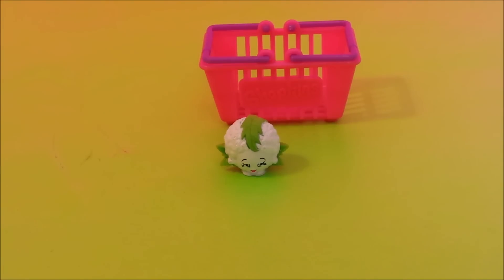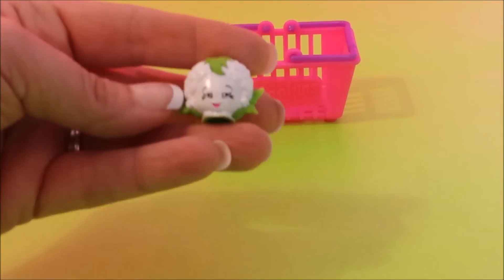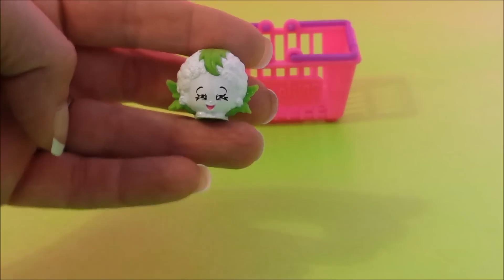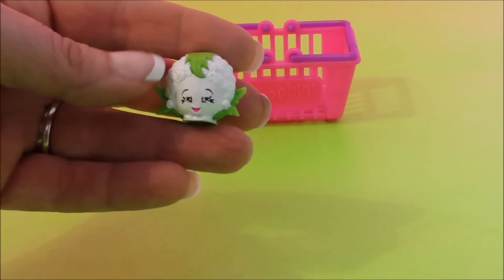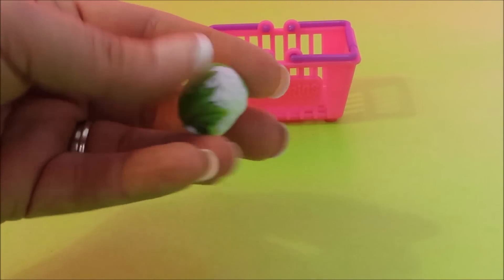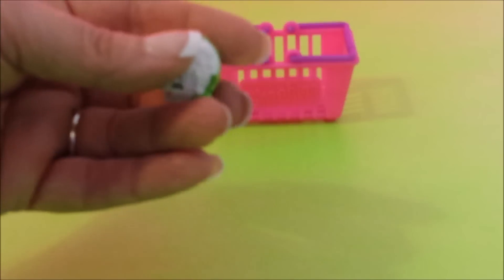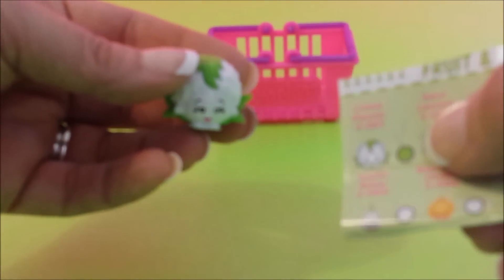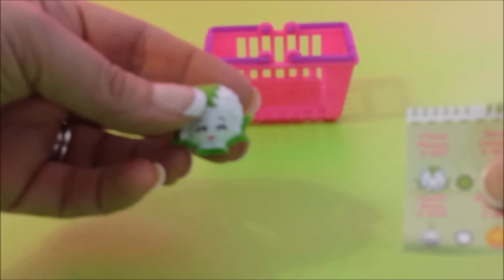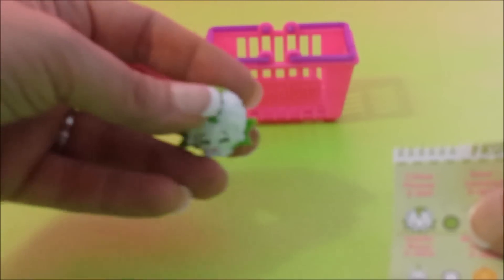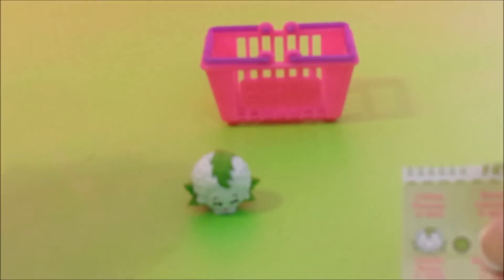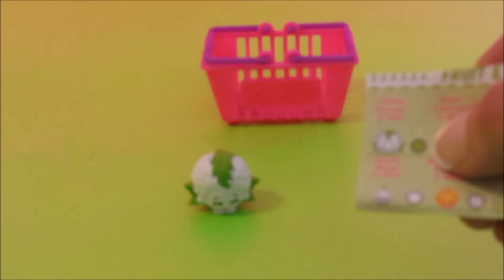Our next shopping basket is the fruit and veggie basket. In this basket the only one we got from this category was Chloe Flower and she is a rare and she's super cute. I think she's supposed to be a cauliflower, maybe a head of cauliflower, but she is a rare. Super cute. That's the only one we got from this category.